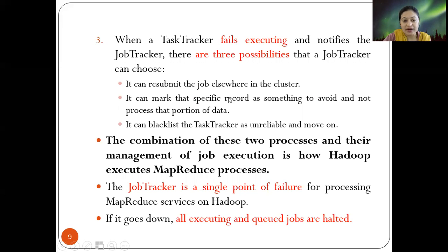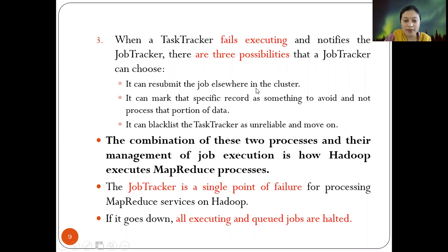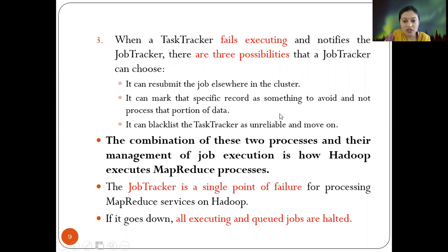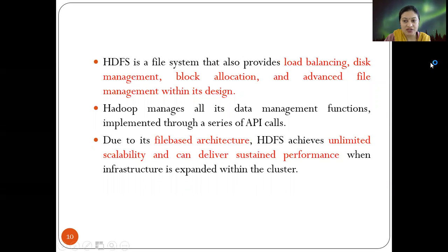The combination of these two processes and their management of job execution is how Hadoop executes MapReduce processes. The job tracker is a single point of failure for MapReduce services on Hadoop — if it goes down, all executing jobs are halted. The job tracker and task tracker are important components for job execution and task execution, and to handle this limitation, a backup of both the job tracker and task tracker should be maintained.